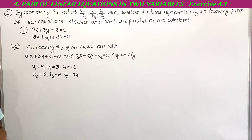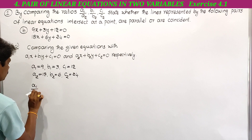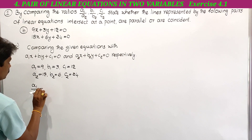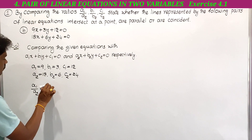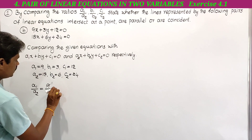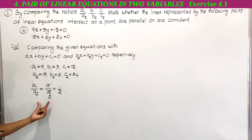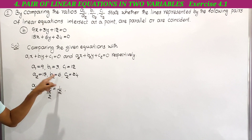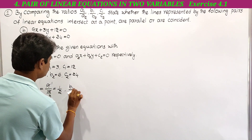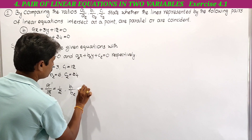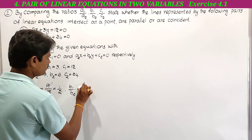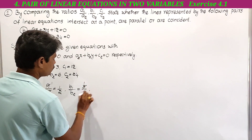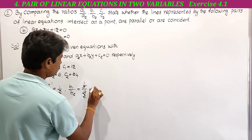Now we have to write a1 by a2, b1 by b2, and c1 by c2. a1 by a2 is equal to 9 by 18. 9 is the common factor; we can cancel to get 1 by 2. So a1 by a2 value is 1 by 2. Next, b1 by b2: b1 is equal to 3 and b2 is equal to 6, so it becomes 3 by 6. Again 3 is the common factor, giving 1 by 2. So b1 by b2 is equal to 1 by 2.